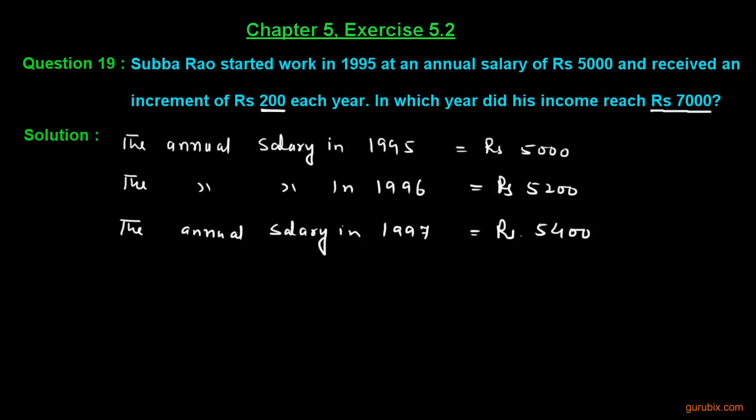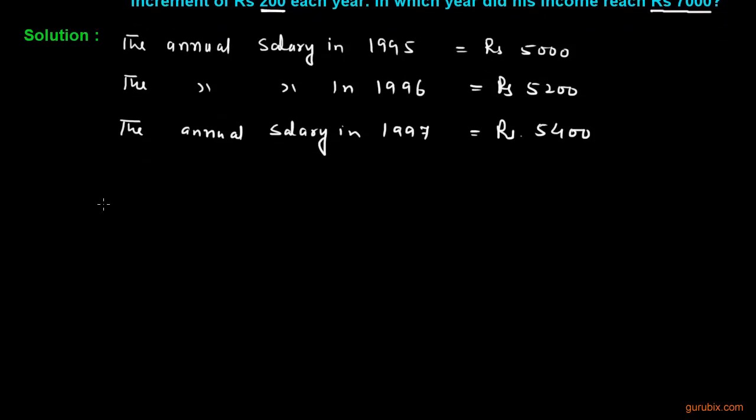So we get our AP, and the AP is 5000, 5200, 5400. We are also given the last term, that is 7000. We have to find out in which year his income reached Rs. 7000.